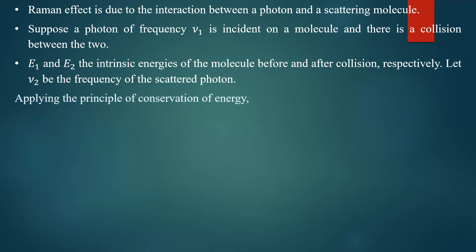Applying the principle of conservation of energy: the total energy before collision equals the total energy after collision. Before collision, the energy is e1 (energy of the molecule) plus h*nu1 (energy of the photon). After collision, the energy of the molecule becomes e2 and the energy of the photon becomes h*nu2.